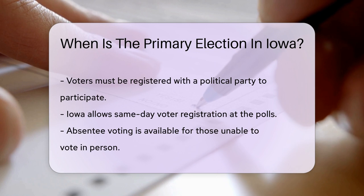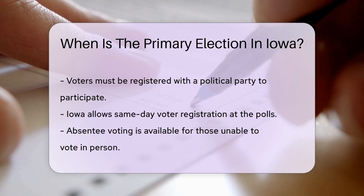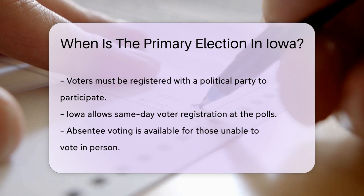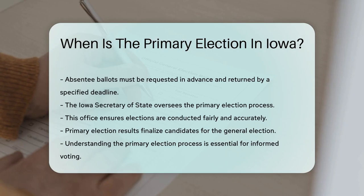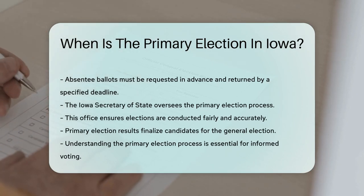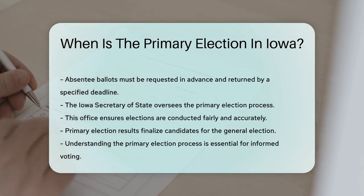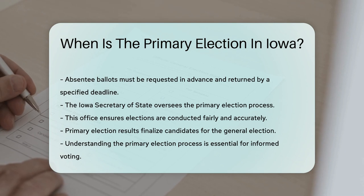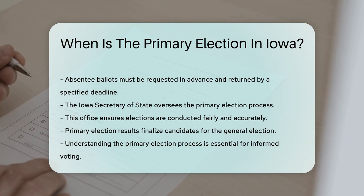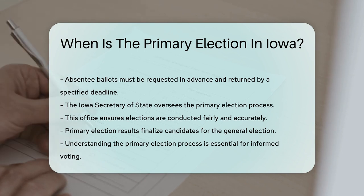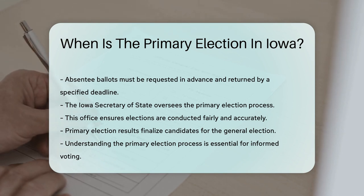The primary election process is overseen by the Iowa Secretary of State, which ensures that elections are conducted fairly and accurately. Results from the primaries are used to finalize the candidates for the general election. Understanding the primary election process is essential for informed voting and helps ensure that the best candidates are chosen to represent the people.